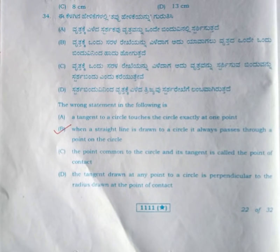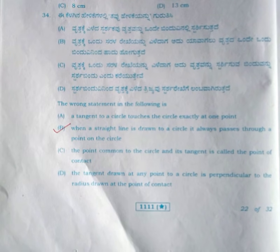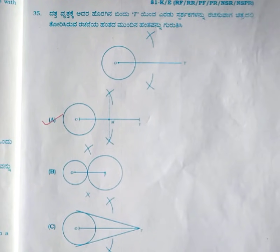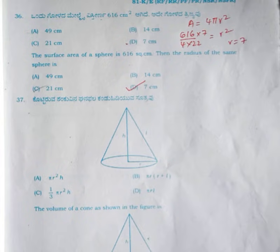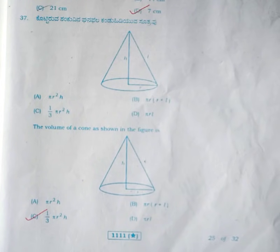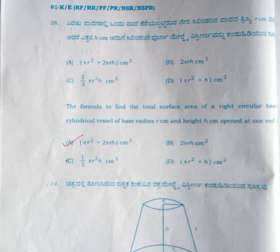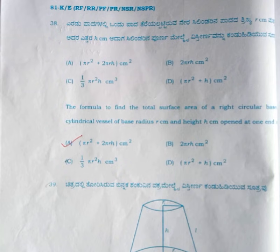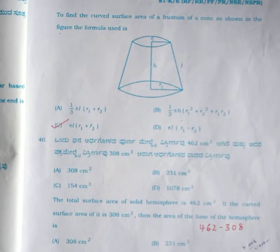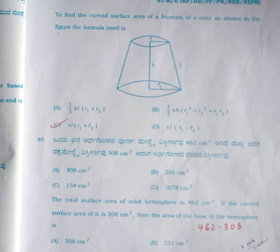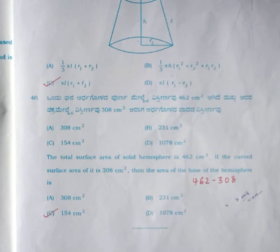Question number 33: the correct answer is option B, 3 centimeter. Question number 34: the incorrect statement is option B. Question number 35: the correct answer is option A. For question number 36, the radius is 7 centimeter, the correct answer is option D. Question number 37: the correct answer is 1 by 3 pi r squared h. Question number 38: the correct answer is option A, pi r squared plus 2 pi r h square centimeter. Question number 39: the correct answer is pi l into r1 plus r2, the lateral surface area of a cone frustum.